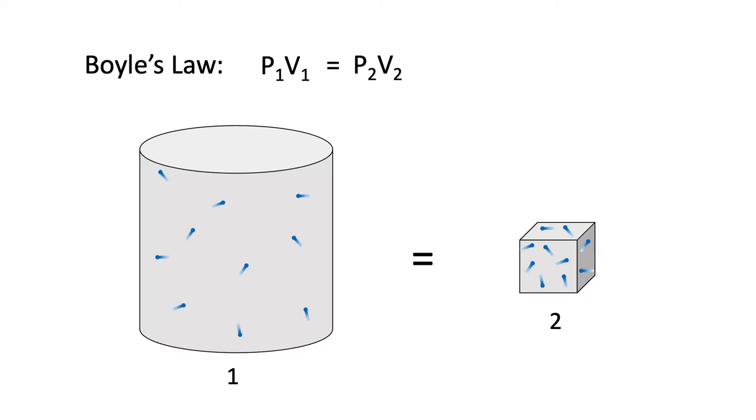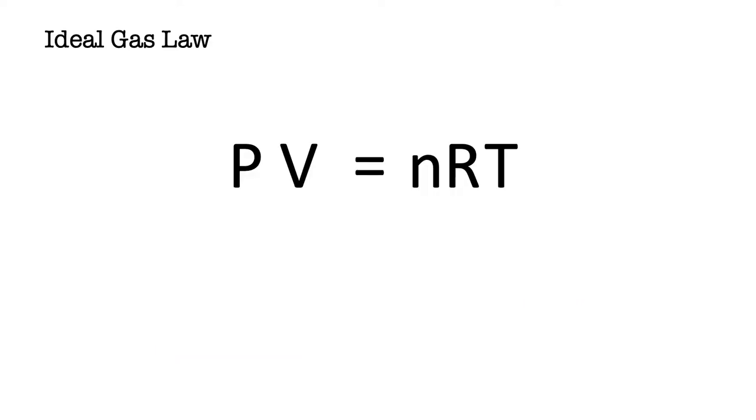Today, students of chemistry are typically taught Boyle's law in combination with Charles' law and Avogadro's law in the form of the ideal gas law. Maybe you've heard it referred to as PV=nRT, where P is the pressure, V is the volume, n is the number of moles of gas, R is the gas law constant, and T is absolute temperature.